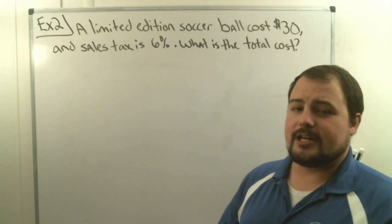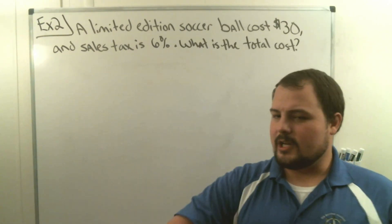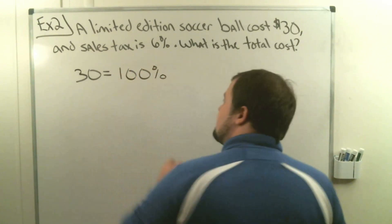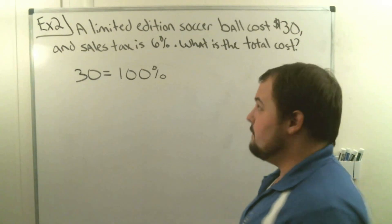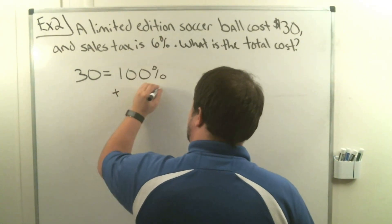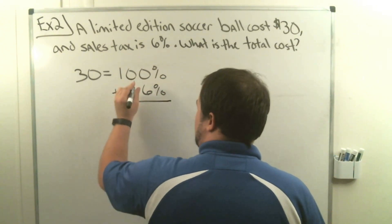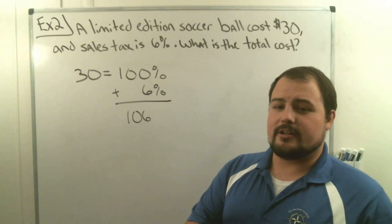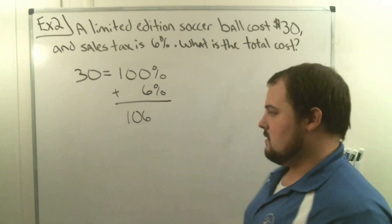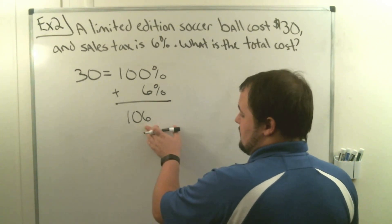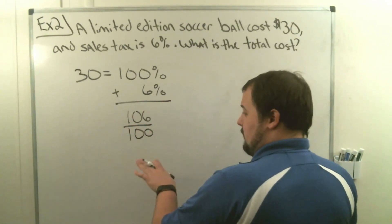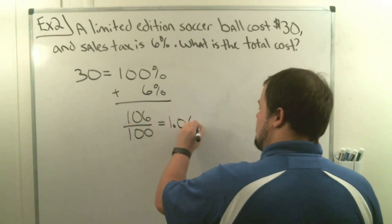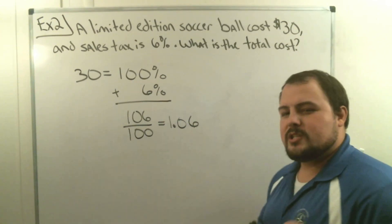In example two, we're looking at a limited edition soccer ball that costs $30, but we have a tax of 6%. We approach it the same way: $30 is equal to 100%. Since it's a tax we add 6%, so 100% plus 6% equals 106%. That's the percent we're going to pay. We divide 106 by 100, or move the decimal two spots, to get 1.06 as our decimal.